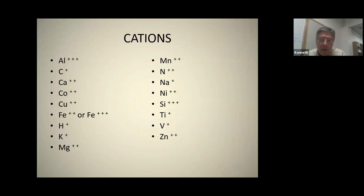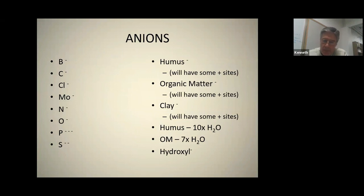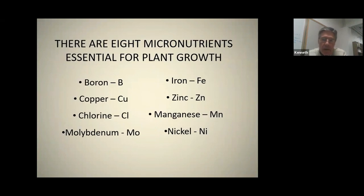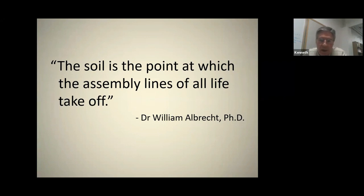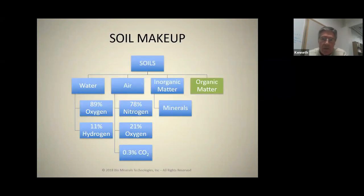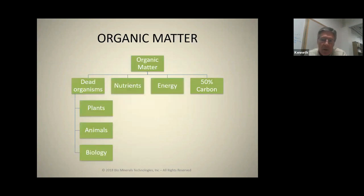Cations are all positive, anions are all negative. We have to have a certain amount of essential elements just to get our plants to live. The soil is the assembly line of all life that lives from it. As Dr. William Albrecht put it: the soil is the point at which the assembly lines of all life take off. Soil is made up of water, air, inorganic matter, and organic matter — you can break each component down. Organic matter includes plants, animals, and biology.